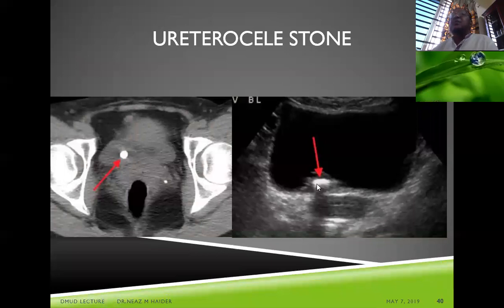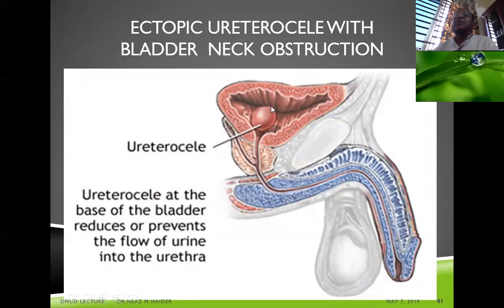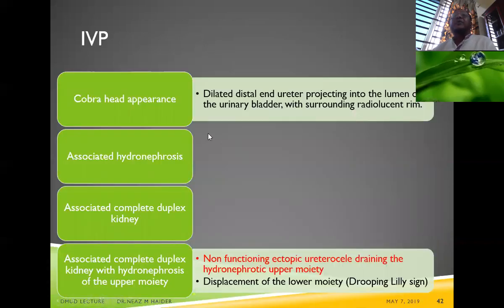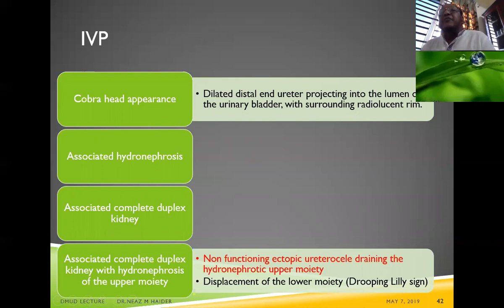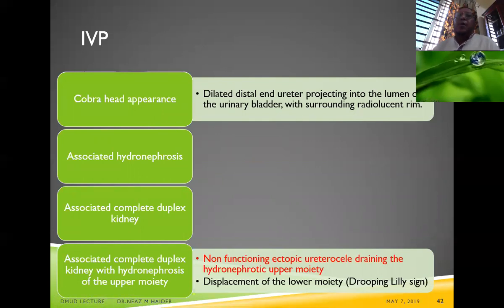Calculus within the ureterocele has been found in approximately three cases in the presenter's practice. On IVP and ultrasound, associated hydronephrosis and complete duplex kidney can be diagnosed. A bifid renal sinus on ultrasound may indicate a duplex kidney with hydronephrosis of the upper moiety associated with a ureterocele.